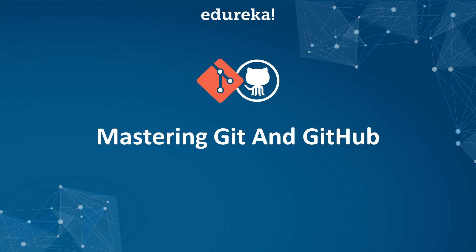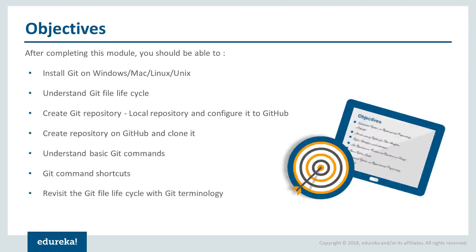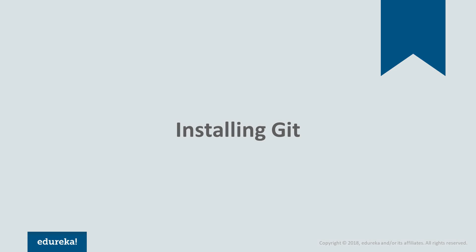Hello all, I welcome you on behalf of Federica for mastering Git and GitHub. In the last module, you learned about version control systems, their advantages and disadvantages, and the basics of Git. Now in this module, you will learn how to install, set up, and configure Git on different operating systems. You will also see the different configurations possible, create an account on GitHub, and see the different options available. So let's start with installing Git.